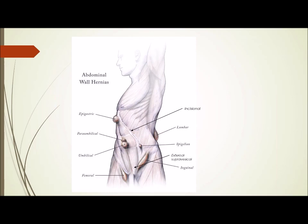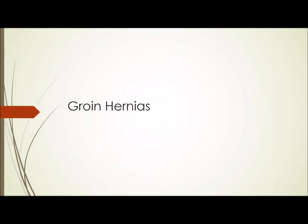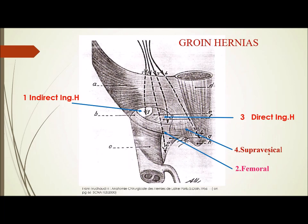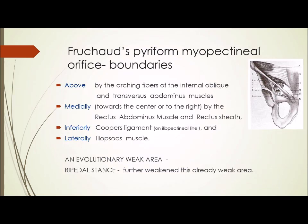Coming to the groin hernias - last time we said we would start about the groin hernias. There is a picture of the lower part of the abdominal wall, the inguinal region. You can see the four perspective areas: the inguinal area, the perceptible area - areas which are weak and further weakened by the standing posture we adopt. These four areas experience maximum pressure with any increase in abdominal pressure. From medial to lateral: the supravesical area, the medial inguinal area, the lateral inguinal area, and underneath the inguinal ligament, the femoral area. These are the four potential areas of weakness in the lower abdominal wall, collectively termed groin hernias.